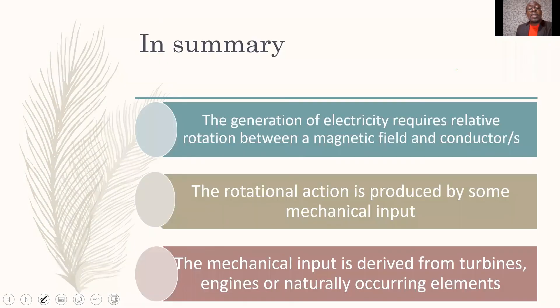So, students, that's it for generation of electricity. But in summary, generation of electricity requires relative rotation between a magnetic field and conductors. The rotational action is produced by some mechanical input. The mechanical input is derived from turbines, engines, or naturally occurring elements, such as wind.